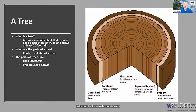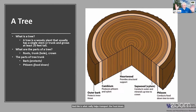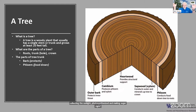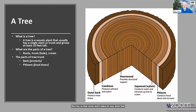Then we think about the phloem — that's the area just inside the bark. This is what helps transport food down. You have all the leaves up there collecting sunlight, photosynthesizing, and making sugars. Then that sugar has to get down to the rest of the tree. It makes its way down the phloem and gets spread out throughout the tree wherever it's needed. A lot of it gets stored in the roots for long-term storage.